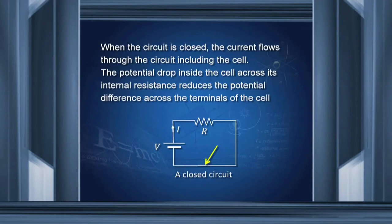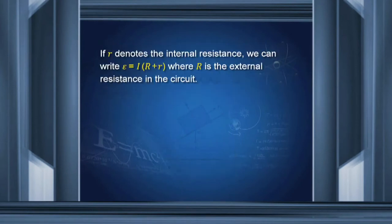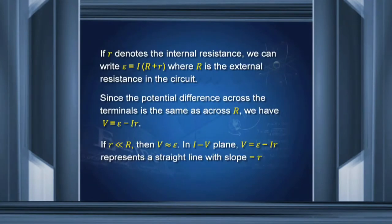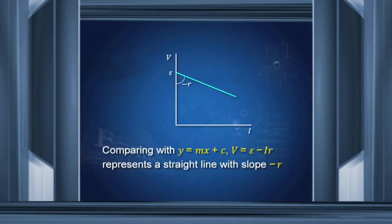When the circuit is closed, the current starts flowing. Every cell has some internal resistance r. In addition, we have also the external resistance R. Therefore, the EMF which is pushing the charge is equal to the current into (R + r). And IR is the potential difference across the terminals of the battery. Therefore, since IR is V, I can write V = ε − Ir. In fact, Ir is the work done in overcoming the internal resistance of the cell, which reduces the EMF by amount Ir. If I plot V against I, then it will be a straight line. This is the offset ε and the slope of this curve is minus r. You can compare with y = mx + c and see the slope is minus r.